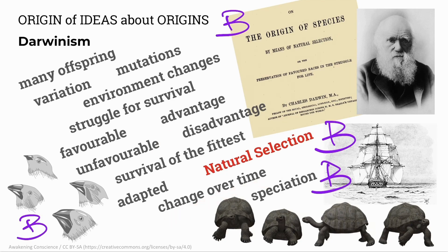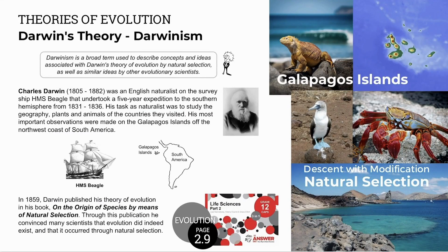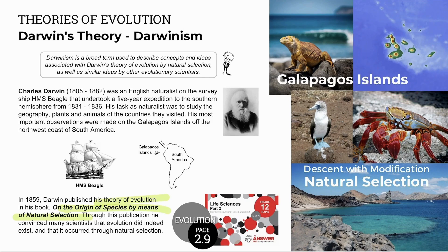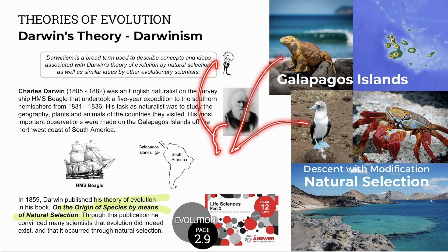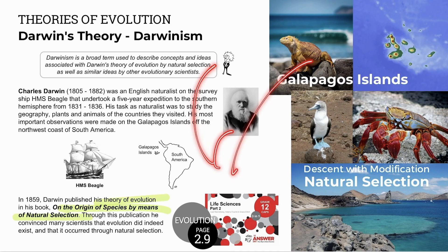Populations change over time and may eventually become so different that they form a new species — speciation. Darwin's trips in the HMS Beagle resulted in his theory of evolution, described in his book On the Origin of Species. The Galapagos Islands, off the coast of South America, were rich in diversity in plants and animals, and Darwin used the expression 'descent with modification' to describe biological evolution. He believed all organisms are related through common descent from one common ancestor — the idea of one tree of life.